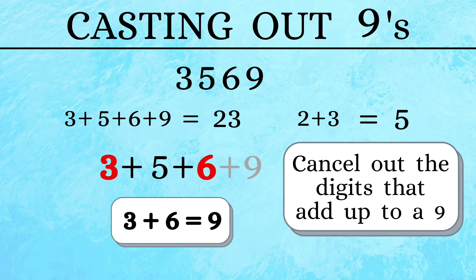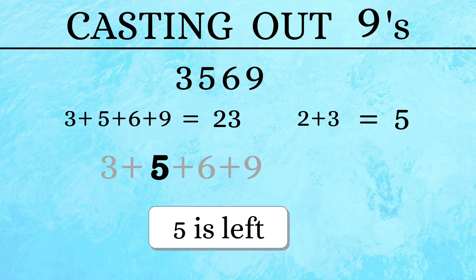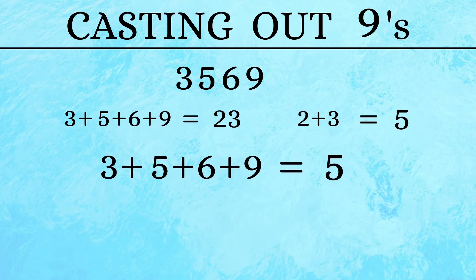So 3 and 6 can be cancelled out. Now we are left out with only a 5. So 5 becomes the sum of the digits.